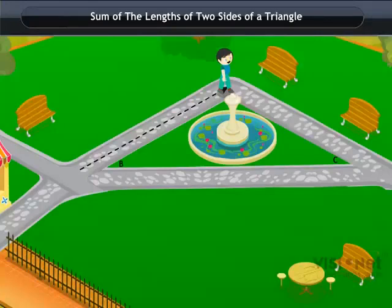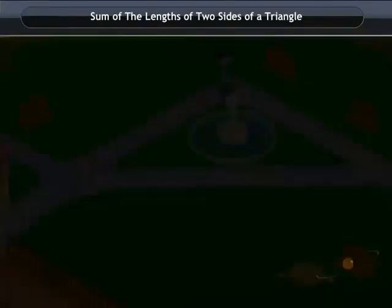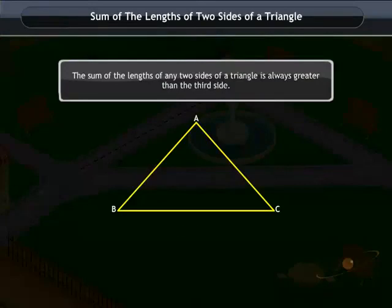Surely he prefers walking straight along BA as it is a shorter path. This rule holds true for every triangle. The sum of the lengths of any two sides of a triangle is always greater than the third side.